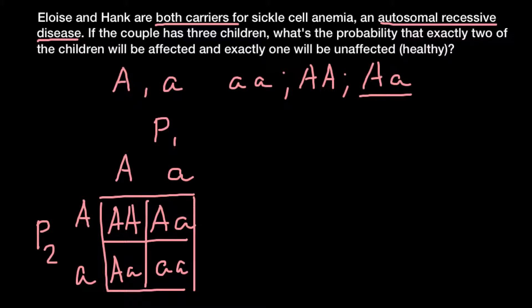As you can see, the probability that they would have a child affected with this genetic disorder is one quarter, or twenty-five percent. And there is a three-quarter probability that their child would not be affected.